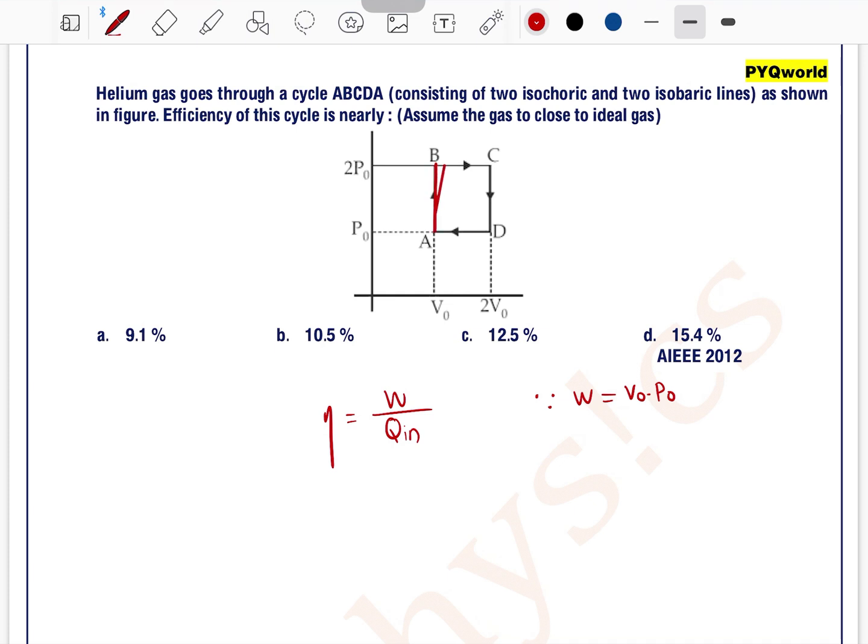Now for process AB and BC, see in case of process AB pressure is increasing, in case of BC volume is increasing. In both cases Q will be positive so Q is heat supplied. See here as helium gas is given we can write degree of freedom is 3 because it is a monatomic gas.